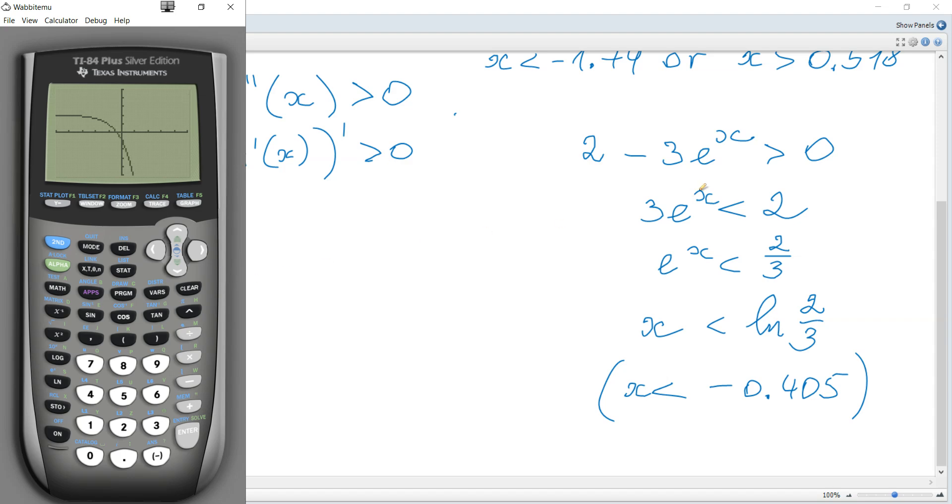We need it to be positive, and you can see that it is positive for values of x from this point and to the left. It means from negative infinity to this point, which means x is less than this x-intercept. We need just the x-intercept.